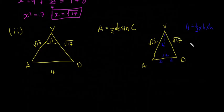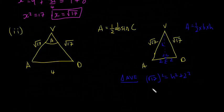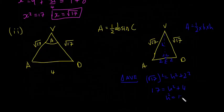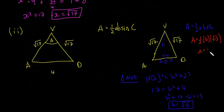I'll add a new point E at the midpoint of AD. For triangle AVE, using Pythagoras: root 17 squared equals H squared plus 2 squared, so 17 equals H squared plus 4, meaning H squared equals 13, so H equals root 13. Now area equals half times base times perpendicular height, which is half times 4 times root 13, giving an area of 2 root 13 for one triangular face.